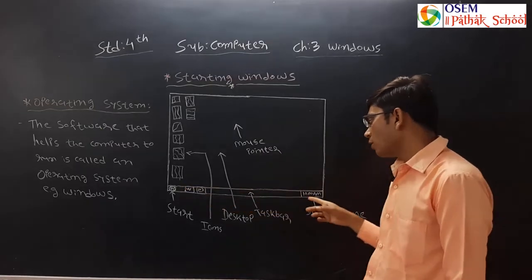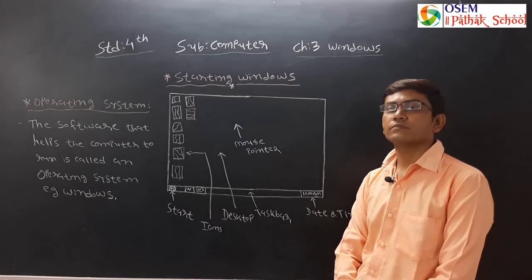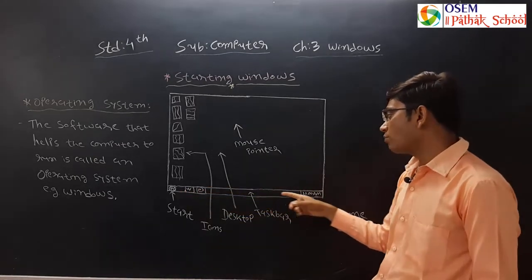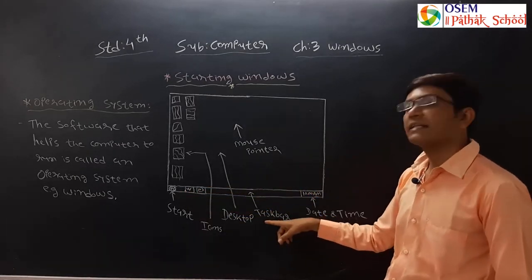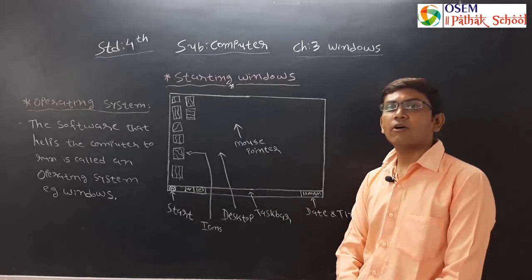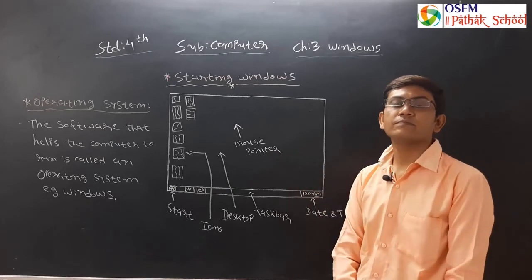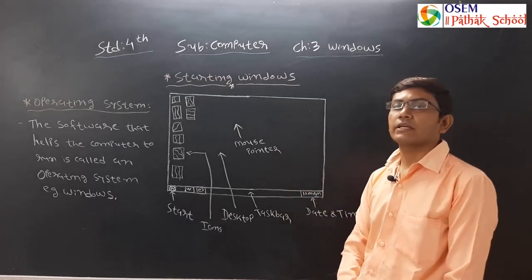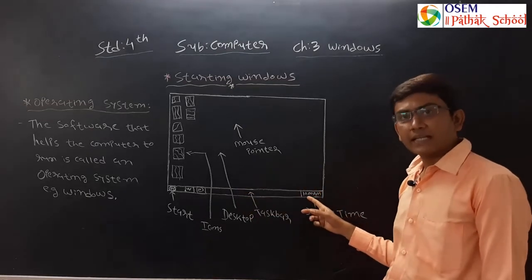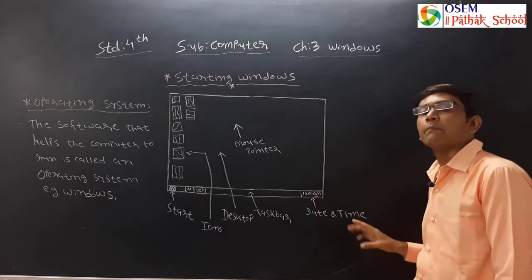At the bottom of the desktop, you can see one horizontal bar. The bar at the bottom of the desktop is called the taskbar, which is available on your Windows screen. On the right side of the taskbar, you can see the current date and time.